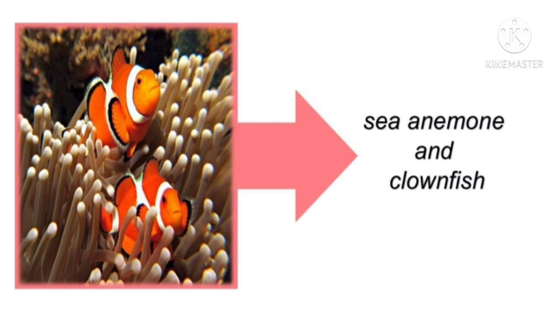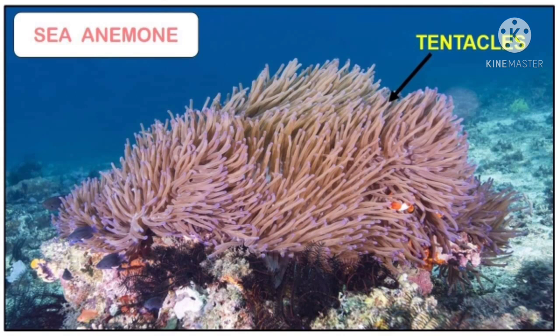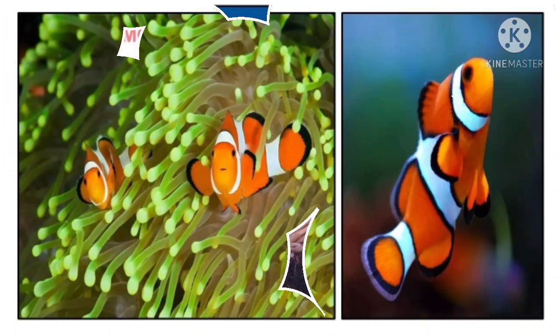We have more examples of mutualism. Number one, we have sea anemone and clownfish — karamihan sa atin ay nakita o napanood na ito sa movie na Finding Nemo. Ang sea anemone ay kabilang sa family ng coral reefs kung saan matatagpuan ito sa malalim na bahagi ng karagatan. Sea anemone serves as the shelter of clownfish, basically for protection. Ang mga sea anemone ay mayroong toxic substance na inilalabas sa mga tentacles nito na nagiging dahilan upang hindi ito lapitan ng ibang sea creatures.